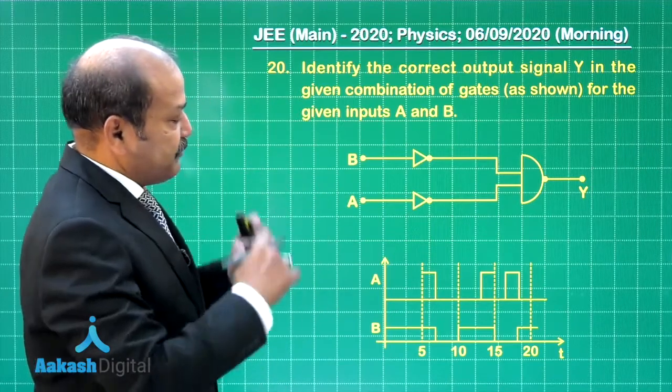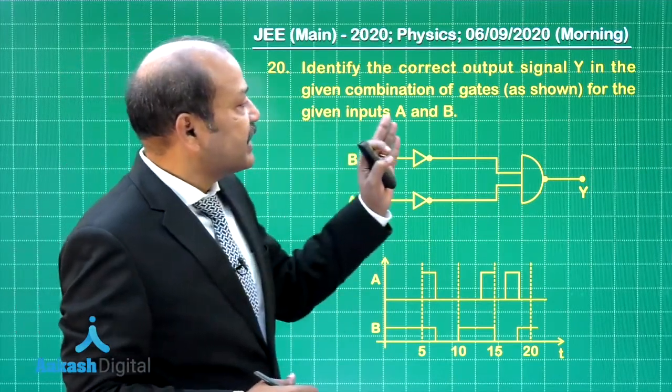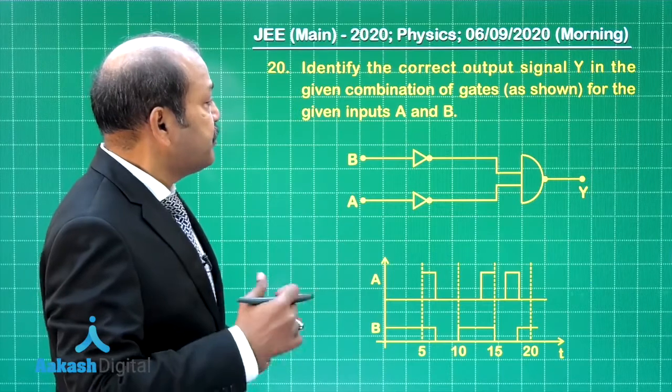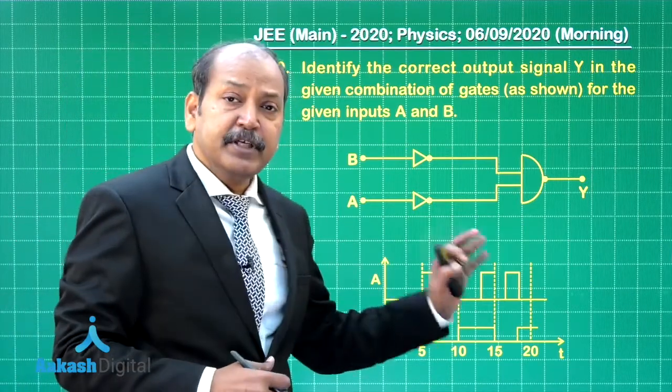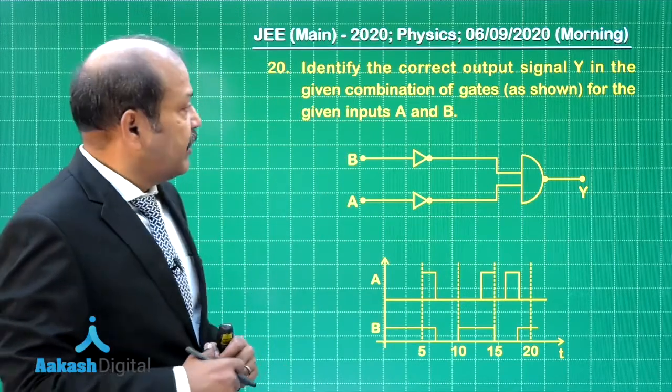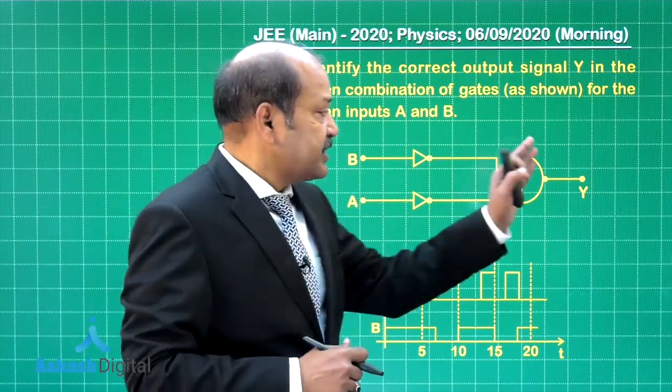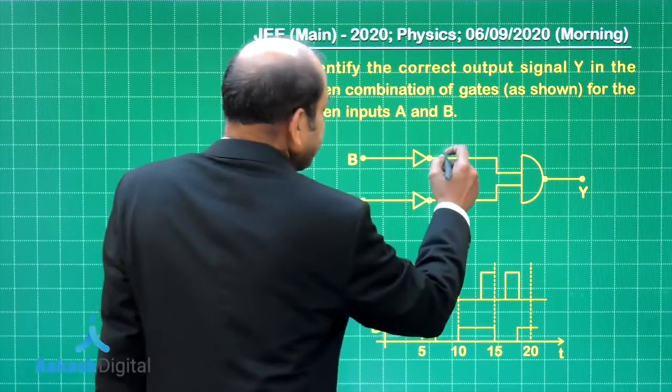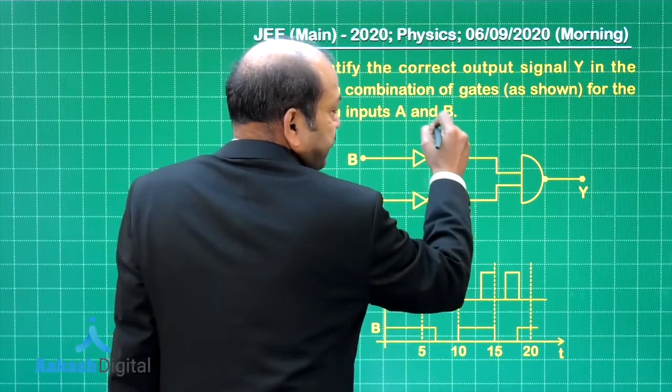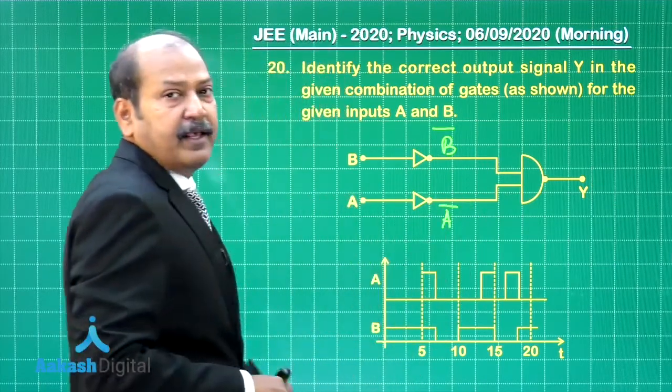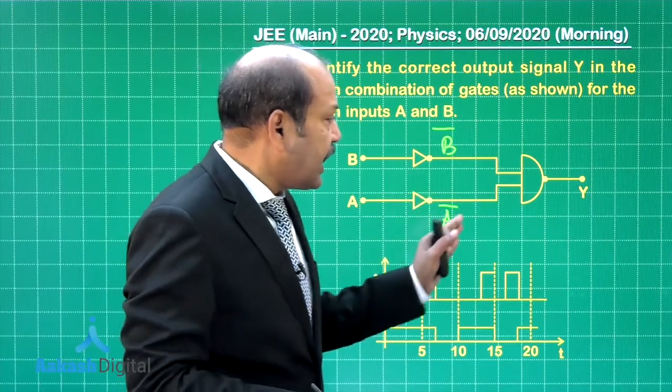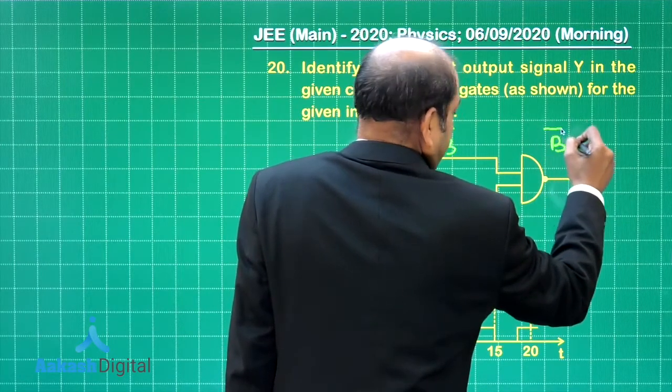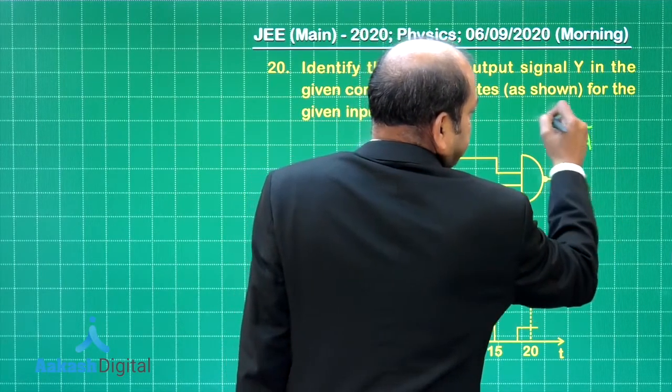Question 20 is from the topic logic gates. It says identify the correct output signal Y in the given combination of gates as shown for the given inputs A and B. The input signal variation with time is given both signals A and B we have to find the correct graph which represents the output at Y with time. If you look at this diagram the output here because it is a not gate so we have here B bar and here it is A bar and then the two are nanded together and finally at Y. And finally at Y we have output given by B bar into A bar and there is a bar on top of this. So this is the output at Y.